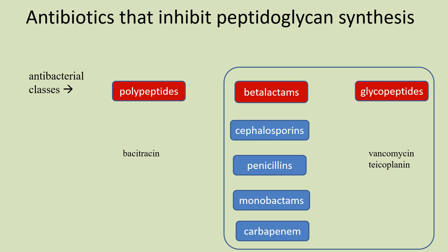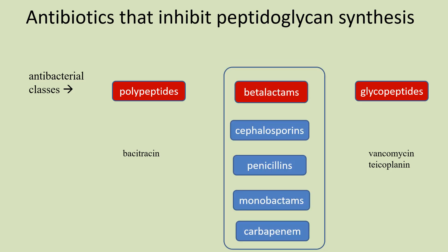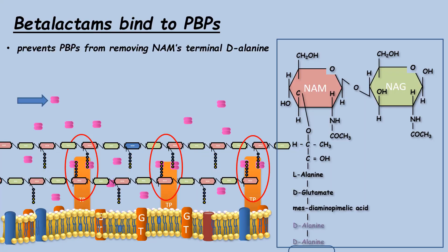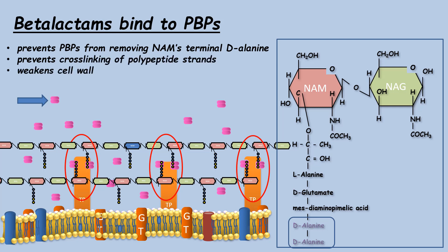The beta-lactam and glycopeptide drugs in this group will prevent this transpeptidase activity, preventing the joining of the polysaccharide strands, but they do this by binding to two different targets. The beta-lactams compete with NAM's two alanines by binding to the penicillin binding protein's transpeptidase active site. If the beta-lactam drug covers the active site, the terminal alanine will not be removed from the peptidoglycan strand, and the long strands of peptidoglycan are not linked together, leaving the cell wall weakened.